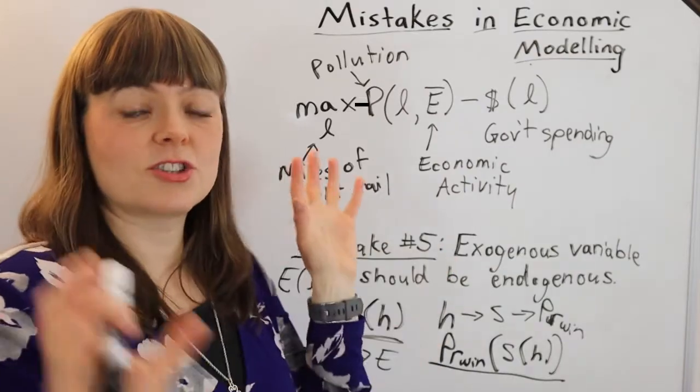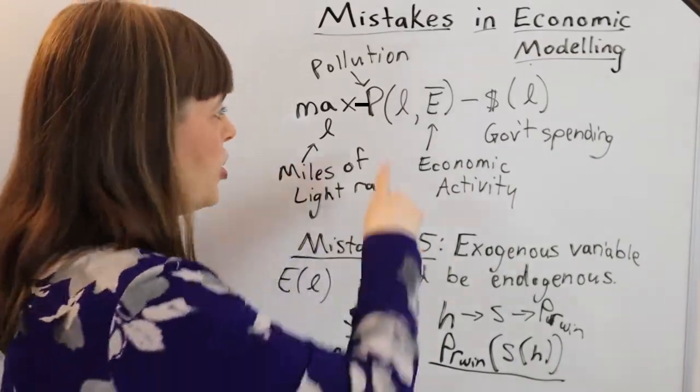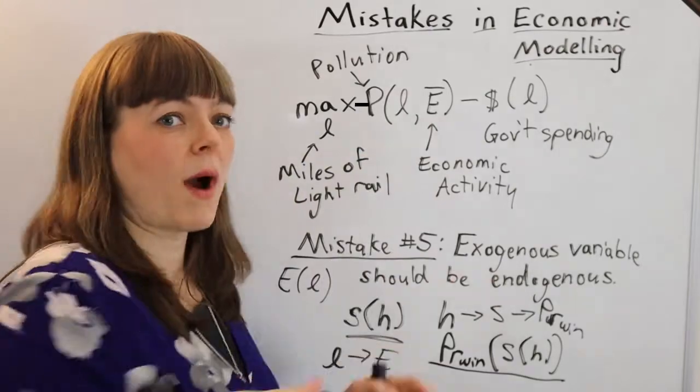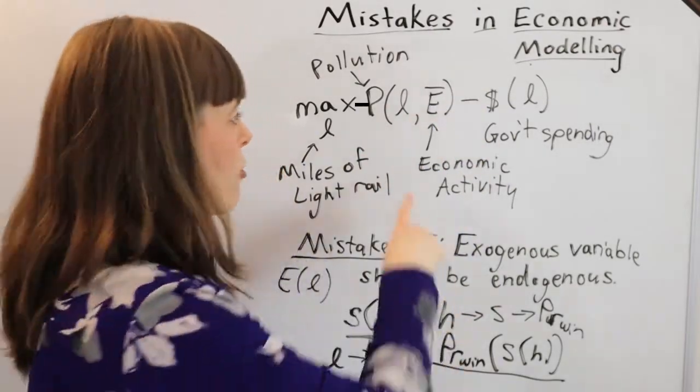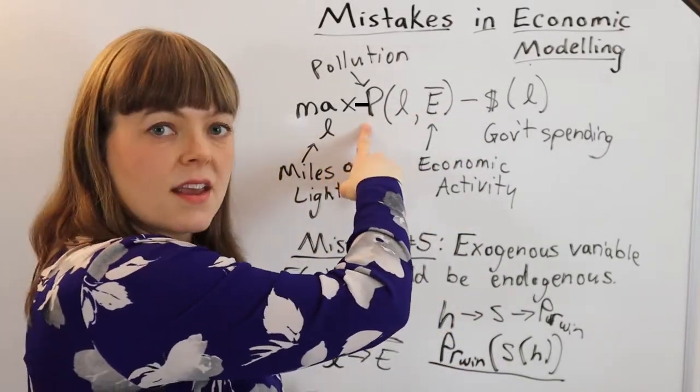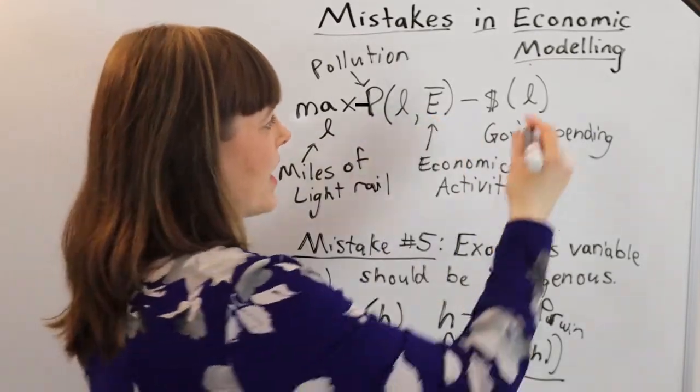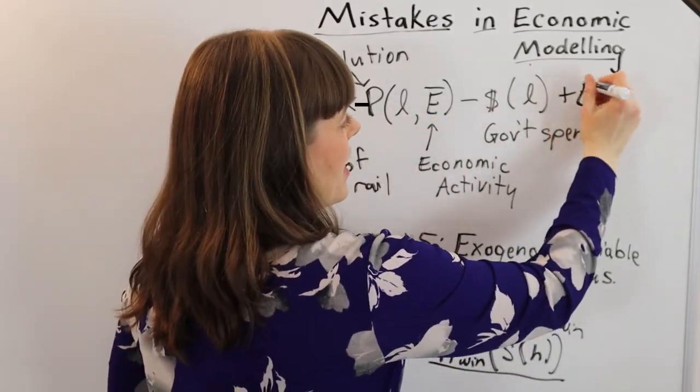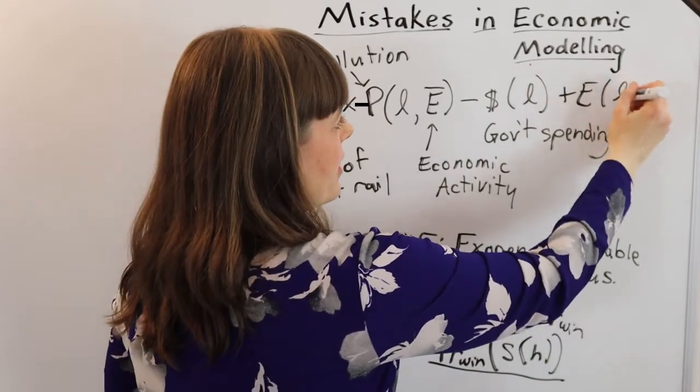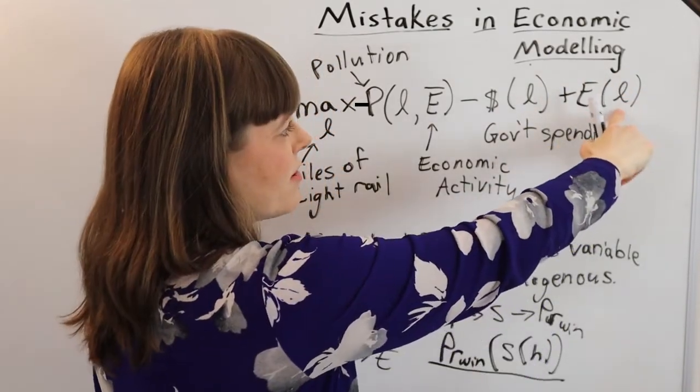There's so many things you could put into this model, and you are choosing to quiet all of that noise to focus on one particular thing. And that means that other things that you could have actually put in the model as an endogenous variable, as another benefit, like you could have had economic activity as a function of light rails.